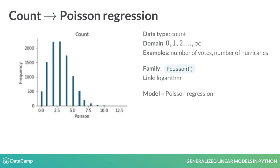Count data are positive, and some examples include the number of hurricanes, the number of bike crossings on a bridge, etc. To fit a GLM, you should use Poisson for the distribution, where the default link function is the logarithm. Models of this form are called Poisson regression, which we will cover in detail in chapter 3.